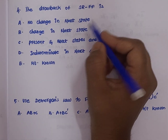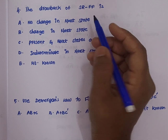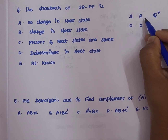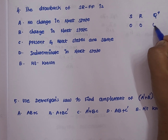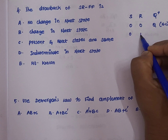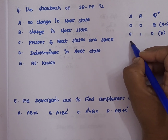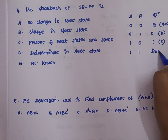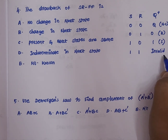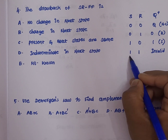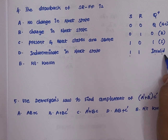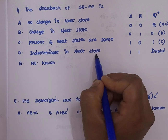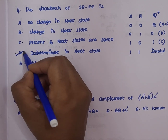Question 4: the drawback of an SR flip-flop is? To solve this we need to know the SR flip-flop truth table. For S=0, R=0, the next state Q+ is Q — no change. For S=0, R=1, next state is 0 — reset. For S=1, R=0, next state is 1 — set. For S=1, R=1, the next state is invalid. So the drawback is: when both S and R are 1, the next state is indeterminate. Option D is the correct answer.